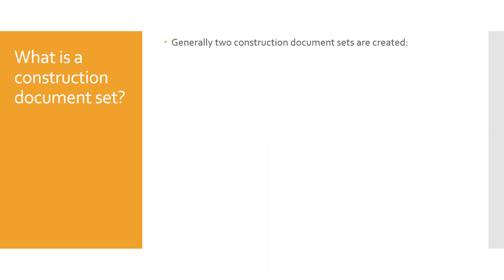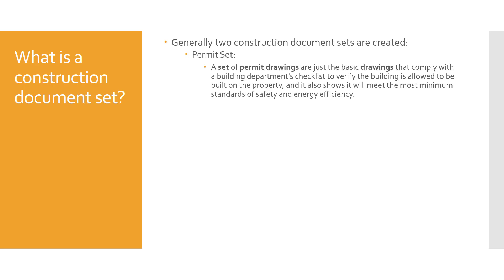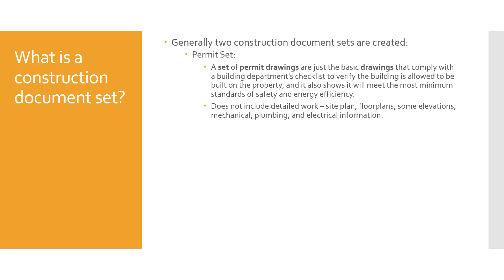Generally we develop two types of construction document sets. The first is a permit set — a basic set of drawings to help a city planner see that the architect is complying with a checklist to verify the building is allowed to be built on the property and meets minimum standards of safety and energy efficiency. This does not include detailed work. In a permit set you'll find site plans, basic floor plans, some elevations, and mechanical, plumbing, and electrical information. Once approved by a city official, a building permit is obtained and construction can begin.